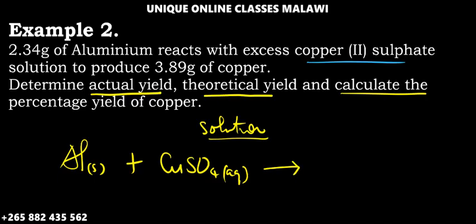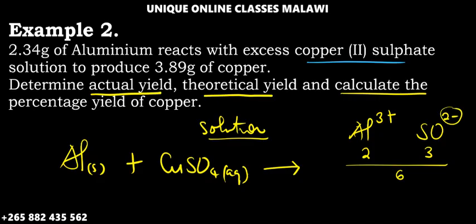After they react, we will get aluminum sulfate. We will form aluminum sulfate, so the formula is Al2(SO4)3.